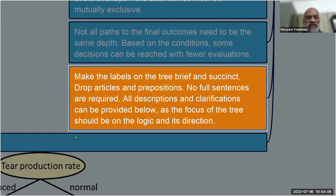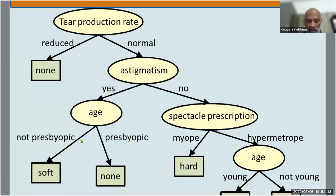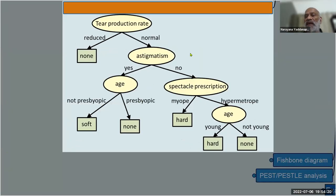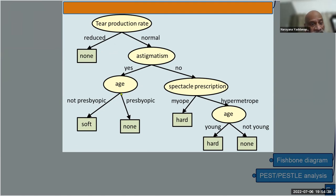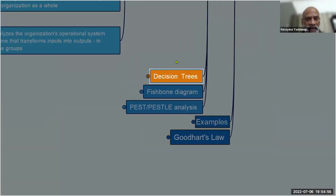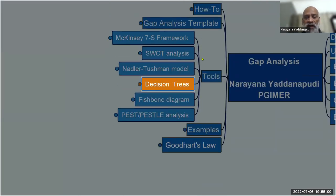An example decision tree for advising contact lens type: check tear production rate — if reduced, don't prescribe contact lenses. If there is astigmatism, check age — if presbyopic, avoid contact lenses; if not presbyopic, contact lenses can be considered. On the other side, spectacle prescriptions for myopes and hypermetropes also involve age assessment. Decision trees are good at making plans for bridging the gap.